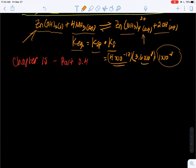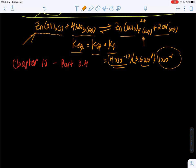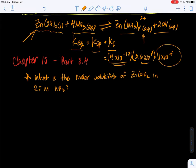So I want to ask a question here: What is the molar solubility of zinc hydroxide in 2.5 molar ammonia? To do this problem you want to set up an ICE table and solve for x.